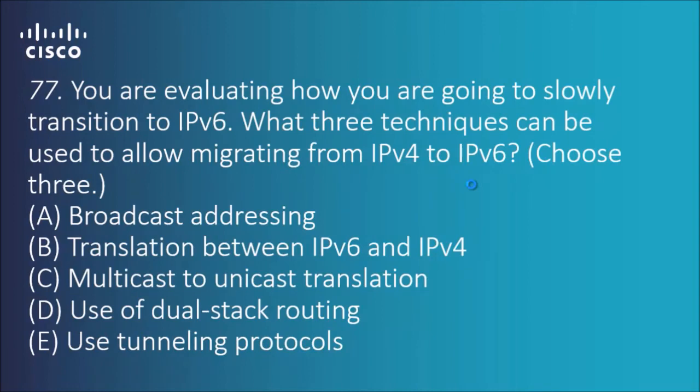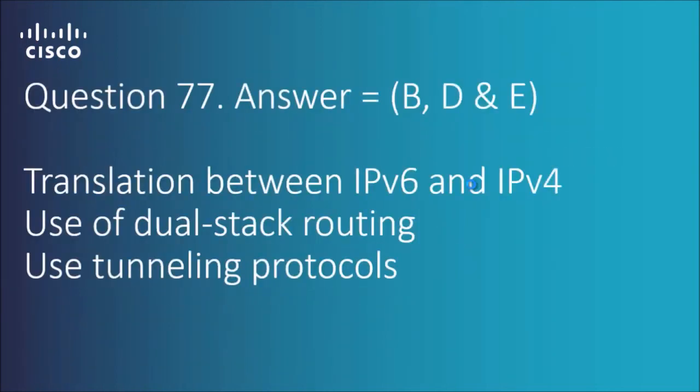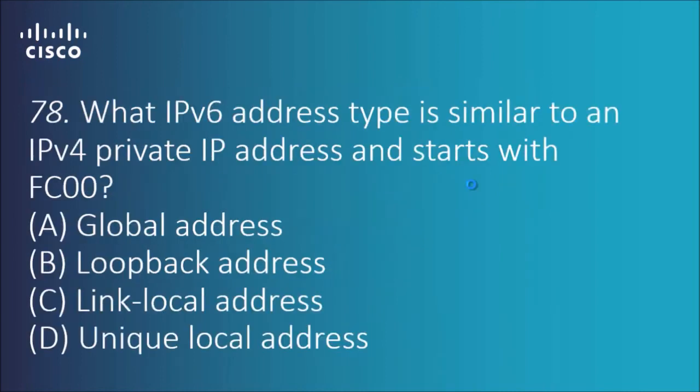Question 77: you are evaluating how to slowly transition to IPv6 — what three techniques can be used to migrate from IPv4 to IPv6? Choose three. The answers are D, N, and E: translation between IPv6 and IPv4, use of dual-stack routing, and use of tunneling protocols.